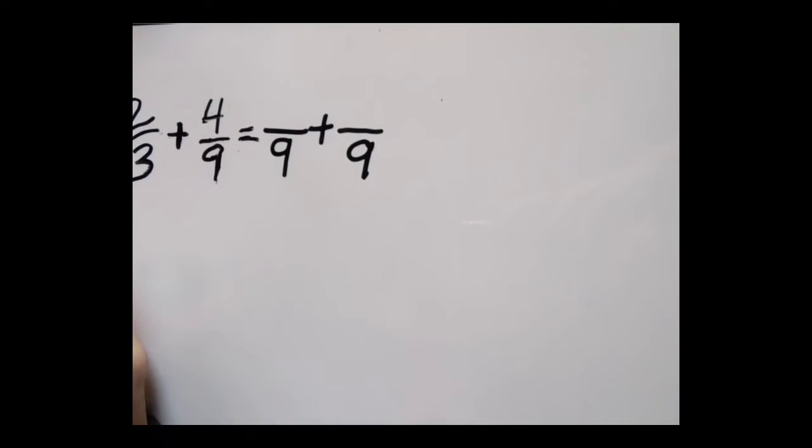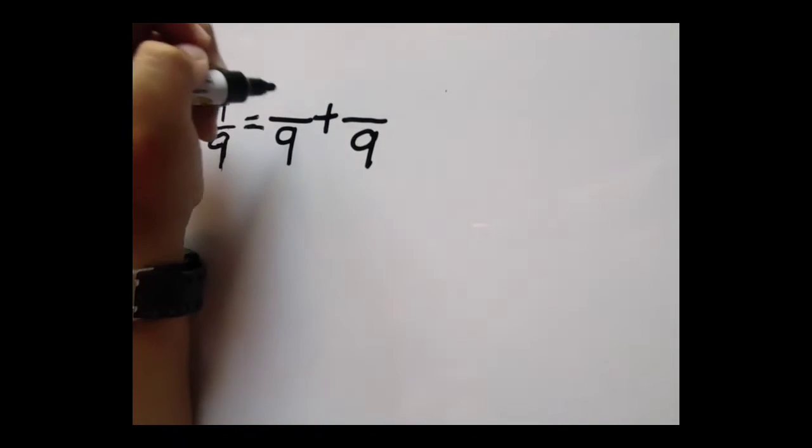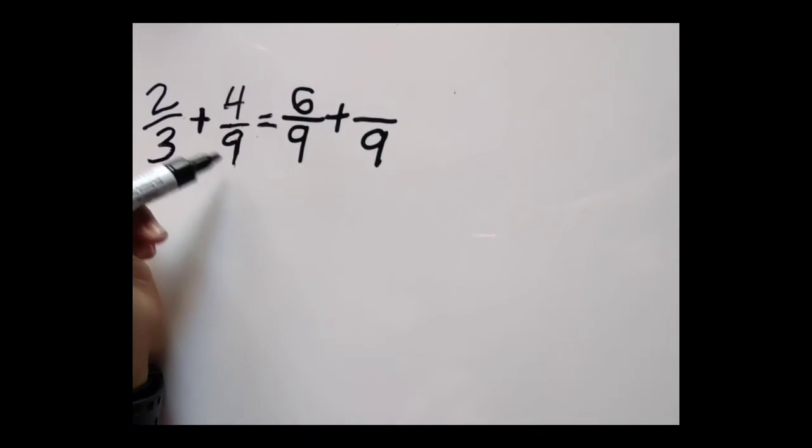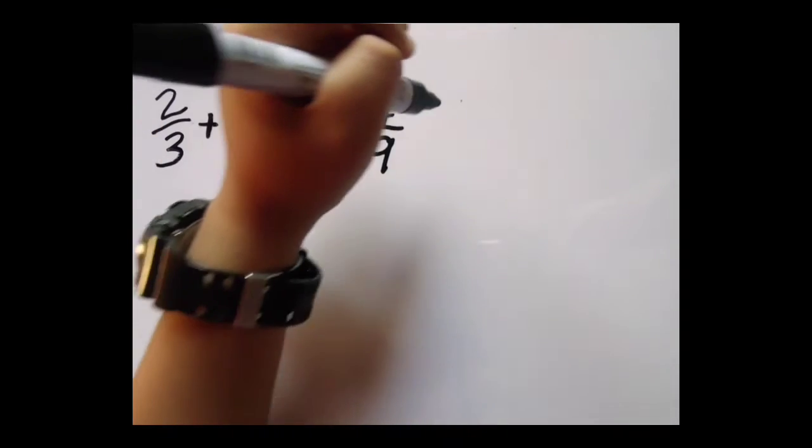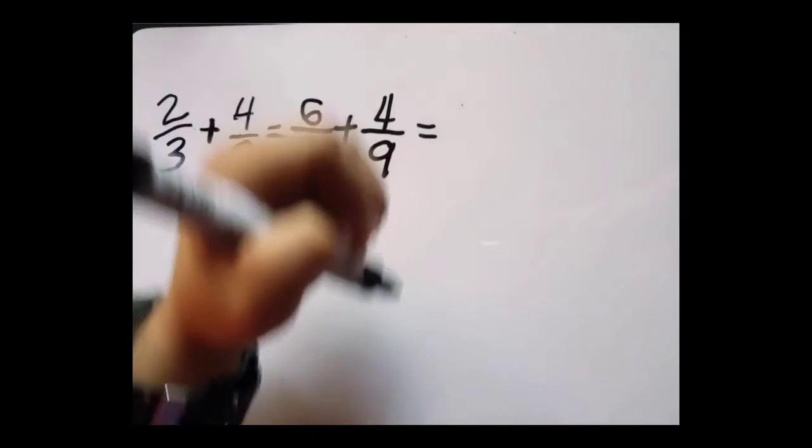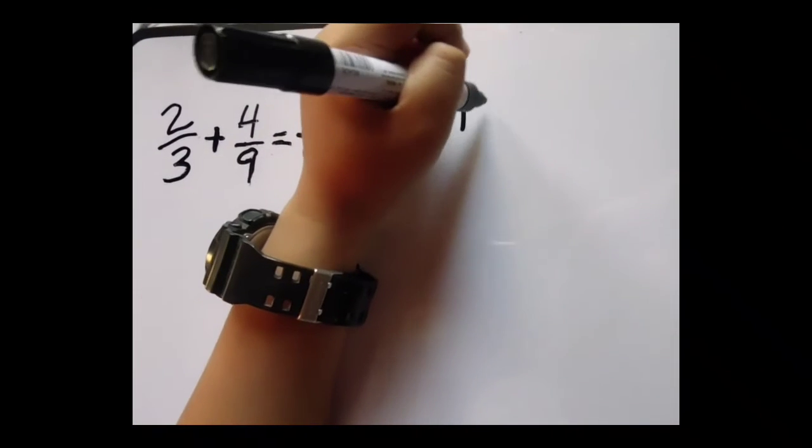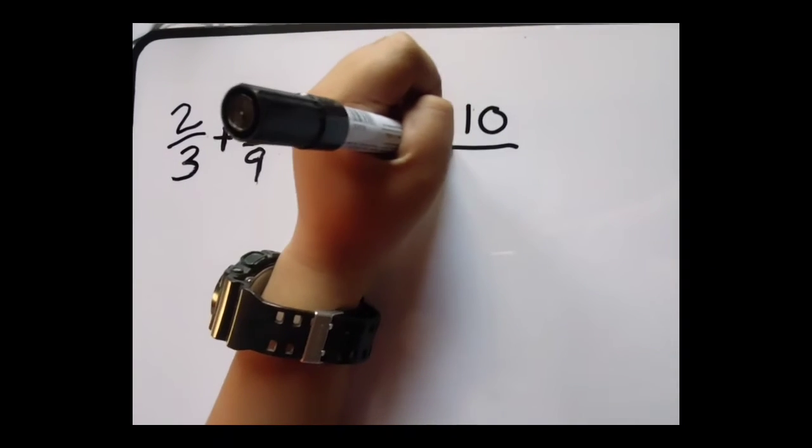9 divided by 3 is 3 times 2 is 6. 9 divided by 9 is 1 times 4 is 4. Then add the numerator: 6 plus 4 is 10. Then copy the denominator which is 9.